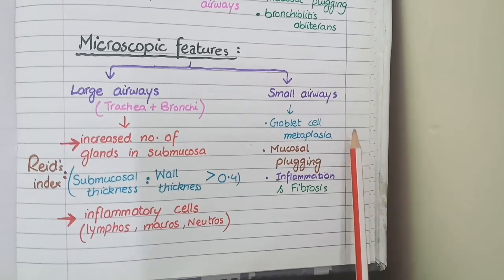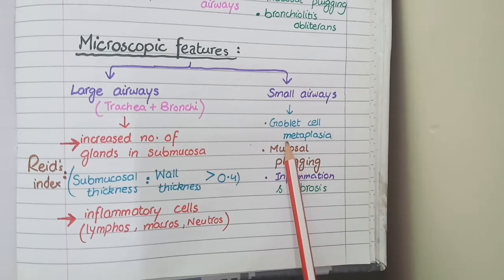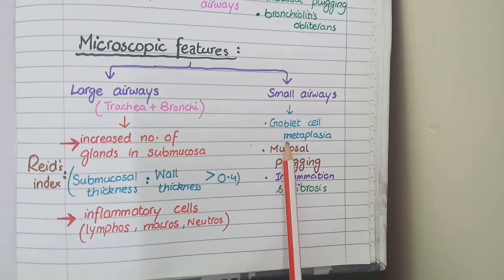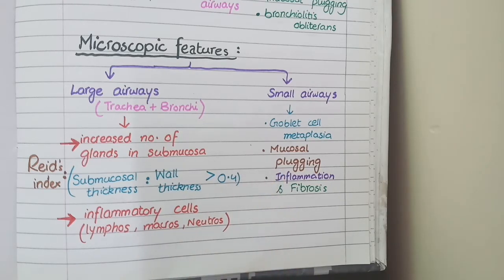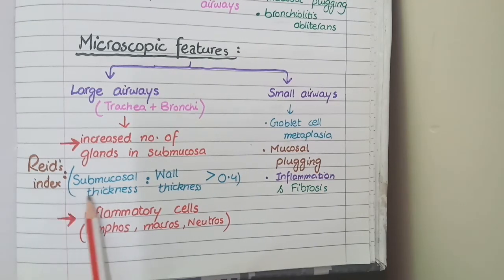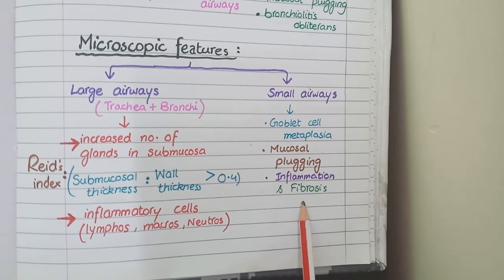In small airways, you see formation of goblet cells. Normally, bronchioles have no or minimal goblet cells, but in chronic bronchitis, irritants such as smoke induce goblet cell metaplasia. These goblet cells secrete mucus, so you see mucus plugging in the lumen of bronchioles. Since bronchitis implies inflammation, you also see inflammatory cells and fibrosis. Overall on microscopy: increased Reid's index and inflammatory cells in large airways; goblet cell metaplasia, mucus plugging and inflammation in small airways.